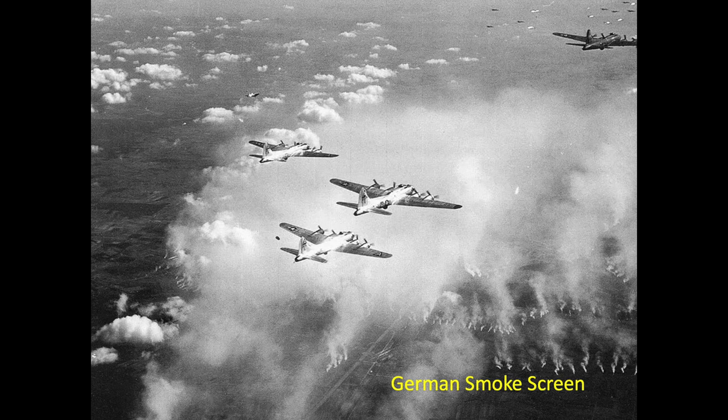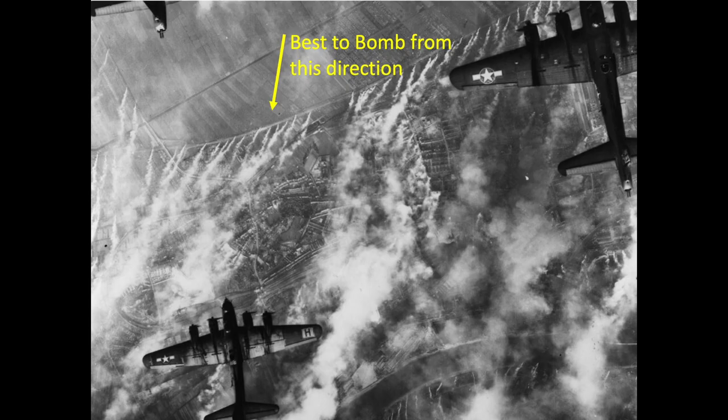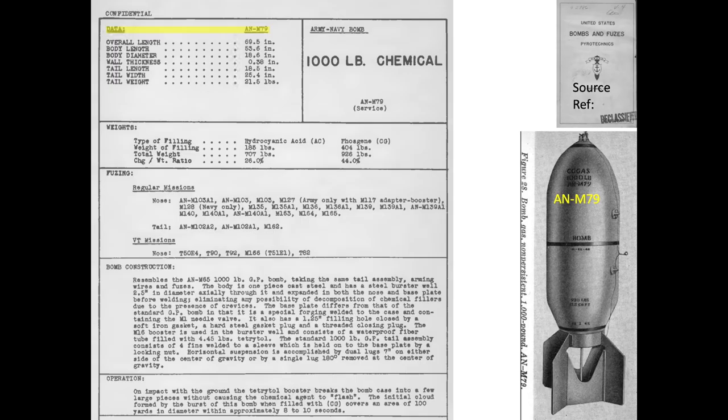The Germans adopted smokescreens to mask the bombing target. Each B-17 will carry six 1,000-pound class phosgene bombs in the plane's bomb bay. The phosgene gas will be contained in the much larger AN-M79 class chemical bomb, which will be filled with 404 pounds of the phosgene gas compound. The detonation train of the M-79 is the same as a mustard gas bomb.